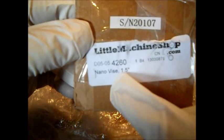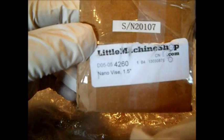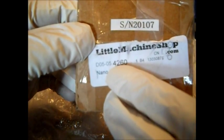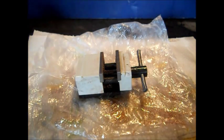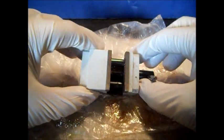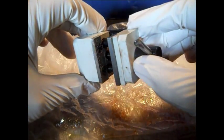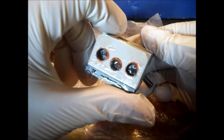Nanovice, one and a half inch. So that's their number, 4-2-6-0. Okay. I want to show all the grease that comes on it. It's pretty nasty, but that's what protects it.